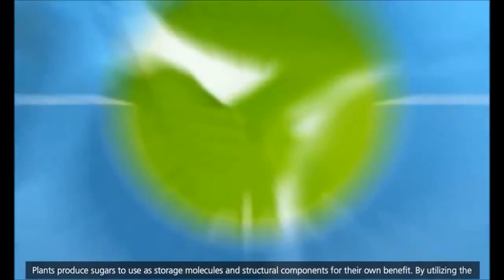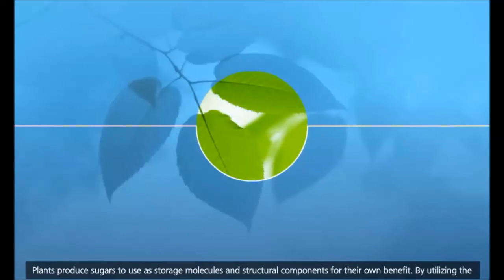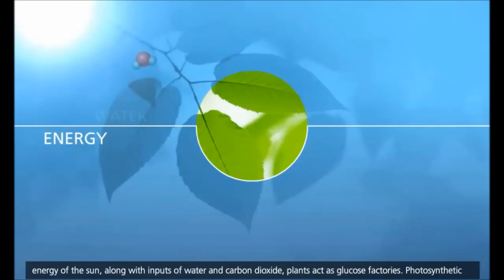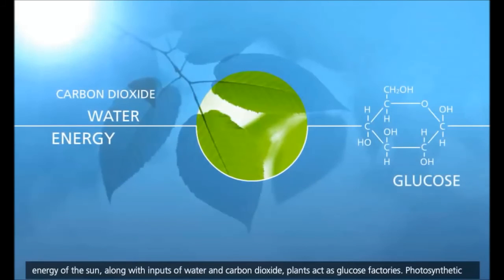Plants produce sugars to use as storage molecules and structural components for their own benefit. By utilizing the energy of the sun, along with inputs of water and carbon dioxide, plants act as glucose factories.